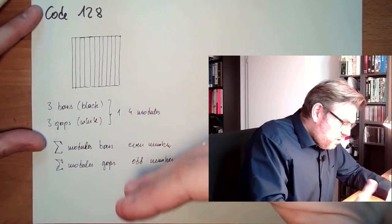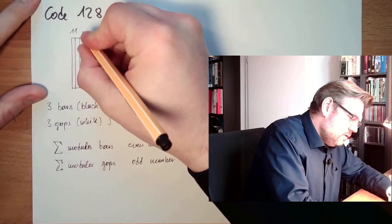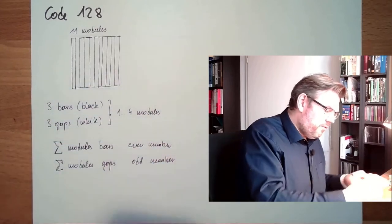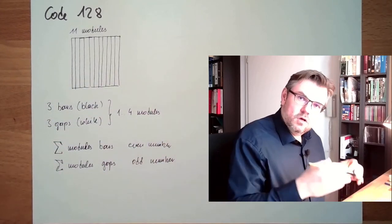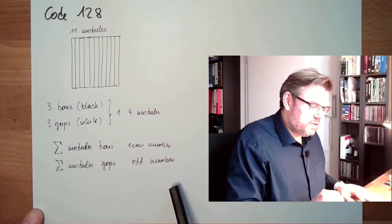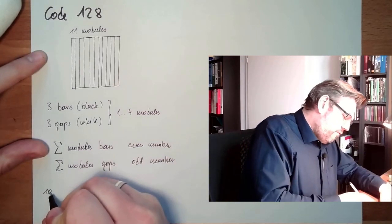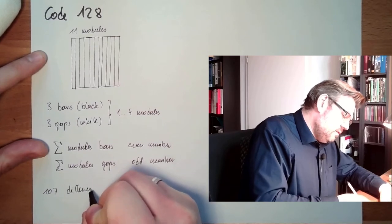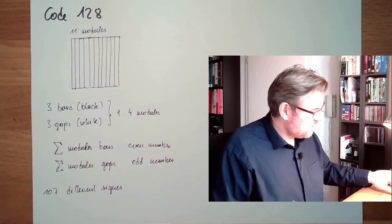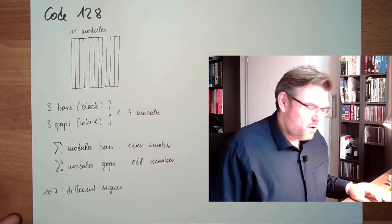If we are looking at those rules—11 modules, three bars, three gaps, each of them is one to four modules broad, the sum of all modules used in bars is an even number, the sum of all modules used in gaps is an odd number—then we come to the conclusion that we have 107 different signs available. And we have even more because we can shift the code tables.